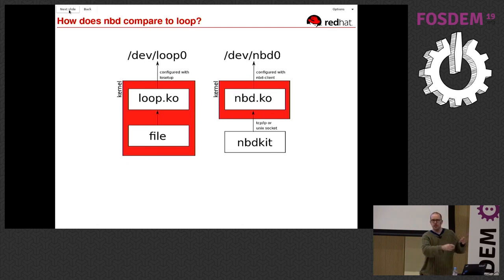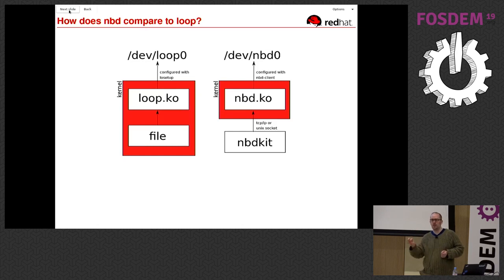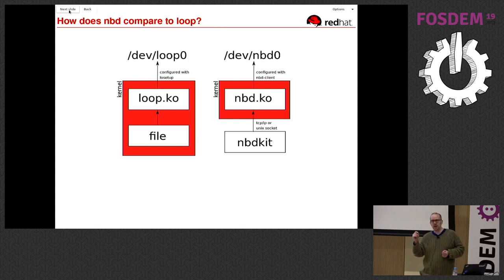The right-hand side has a user process — this is critical. In this case it's called nbdkit, but other NBD servers are available, and very good ones too. The kernel talks to that process using a TCP port or a Unix domain socket, as you require.